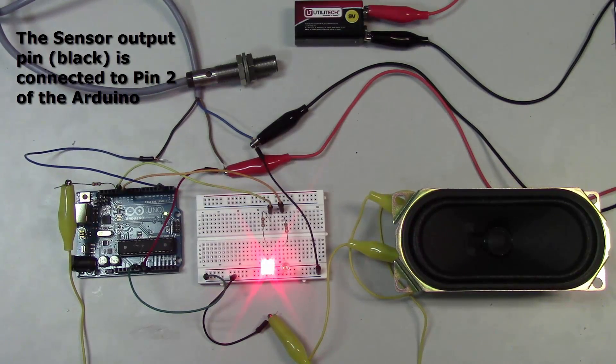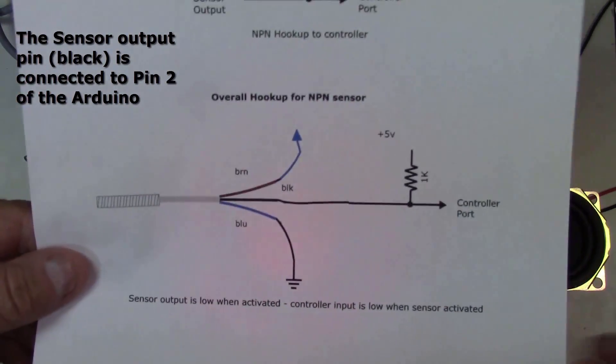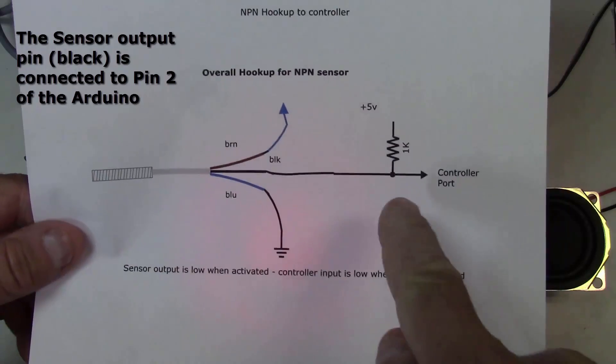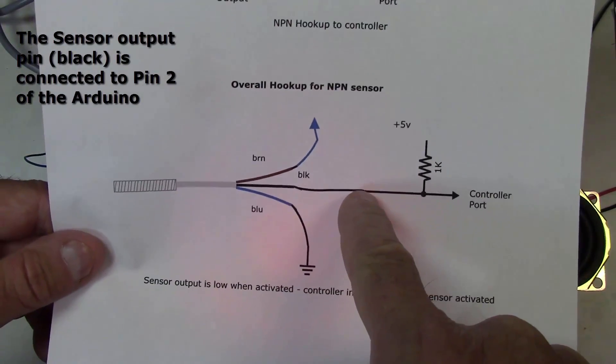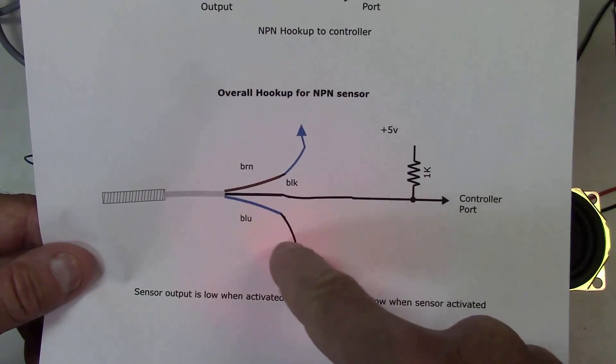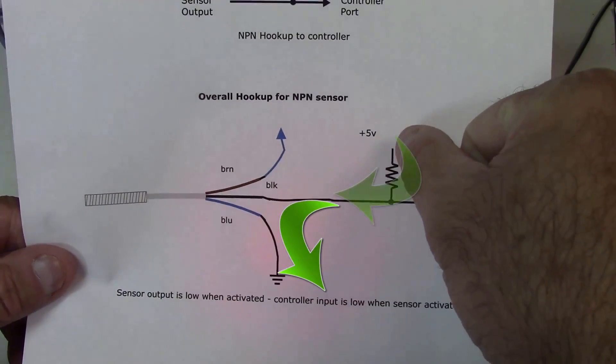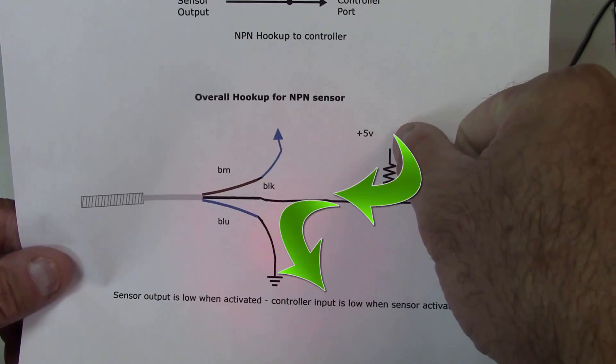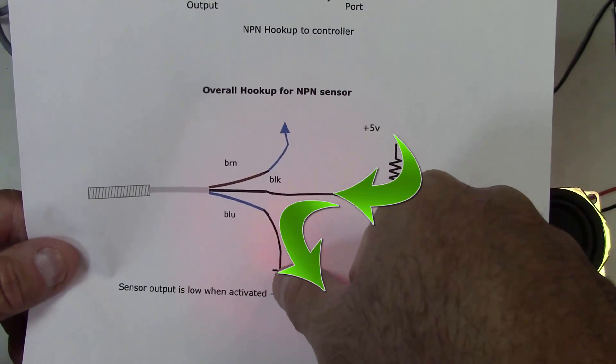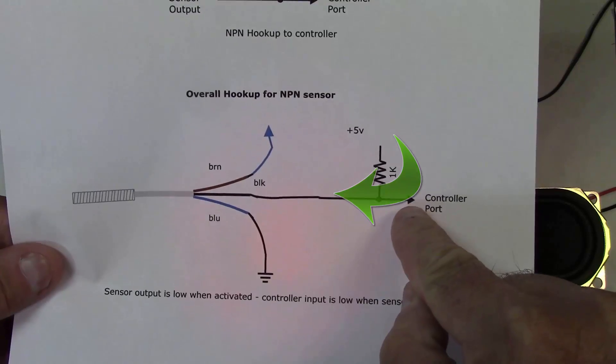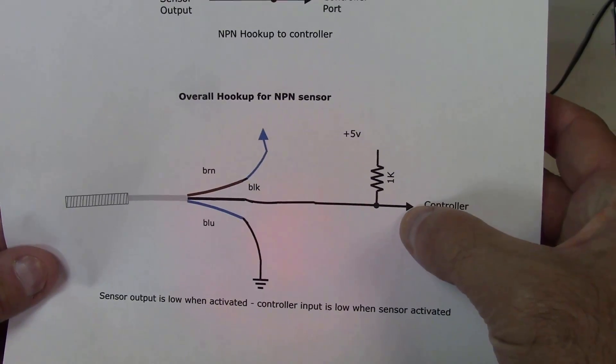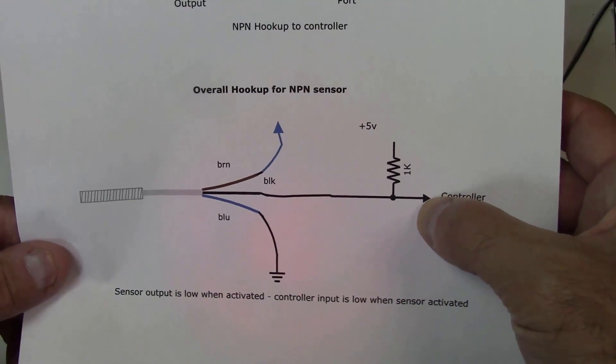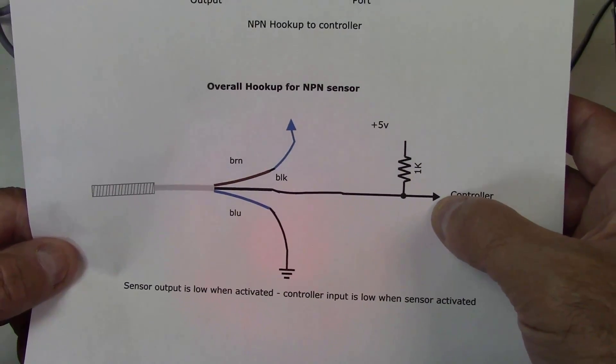So what we're essentially doing here when we go back to this drawing is when the sensor is activated this output pin on the sensor becomes grounded. When that happens it completes the circuit from V plus on the Arduino to ground here so this output becomes 0 volts but when we don't have the sensor activated this output will be plus 5.